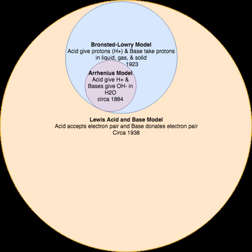The first scientific concept of acids and bases was provided by Lavoisier in around 1776. Since Lavoisier's knowledge of strong acids was mainly restricted to oxoacids, such as HNO3 (nitric acid) and H2SO4 (sulfuric acid), which tend to contain central atoms in high oxidation states surrounded by oxygen, and since he was not aware of the true composition of the hydrohalic acids HF, HCl, HBr, and HI, he defined acids in terms of their containing oxygen, which he named from Greek words meaning "acid former" — from the Greek oxys meaning acid or sharp, and ganomai meaning engender.